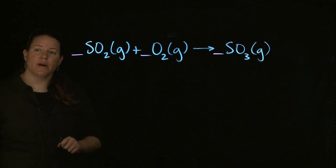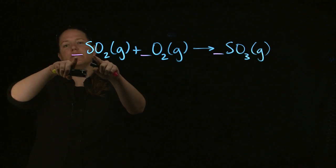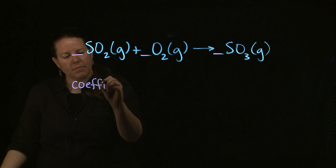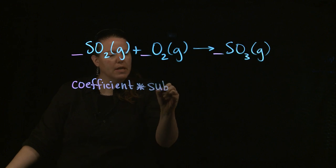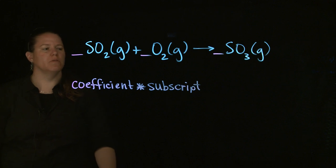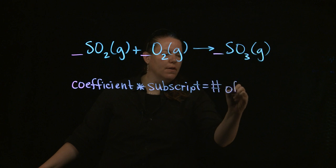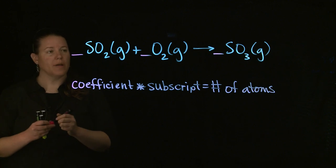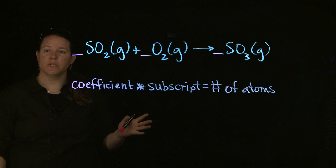What you're going to do is to find the number of each element. You're just going to simply take that coefficient and multiply it times the subscript. So the coefficient, the big number in front times the subscript to the immediate right of that particular elemental symbol will tell you the number of atoms of that element on one side of this equation.